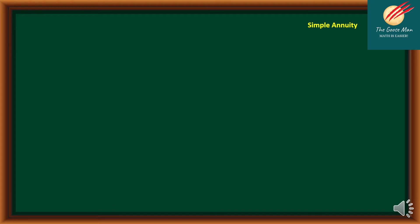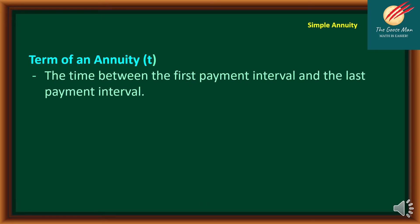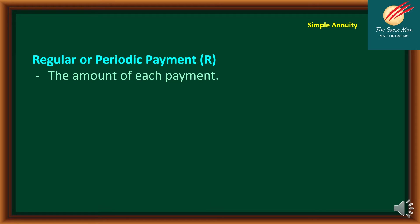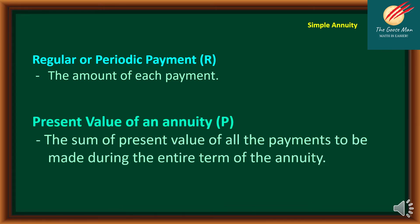The next thing we will talk about are the terminologies related to simple annuity. First, we have the term of annuity, symbol T — the time between the first and last payment interval. Next is the future value of annuity, symbol F — the sum of future values of all payments during the entire term. The regular or periodic payment, symbol R, is the amount of each payment. Finally, the present value of an annuity, symbol P, is the sum of present values of all payments during the entire term.